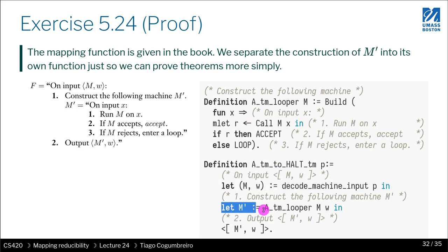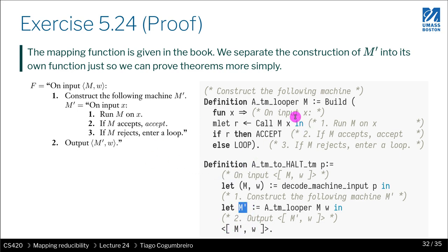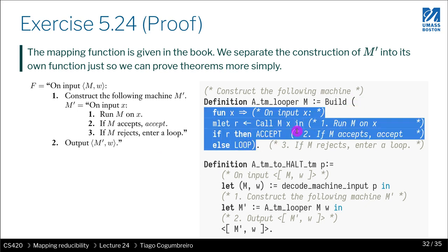The second point is to build the following machine M prime, which we postpone the discussion of, and then output (M prime, W) using the angle-bracket notation. That corresponds to the notation in the book. You just return it because it's just a function — you return the pair you just constructed. The difficulty is how do I build M prime? The way you build M prime is by using the special keyword 'build', which takes a program and returns a Turing machine.